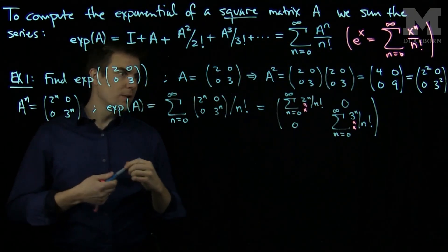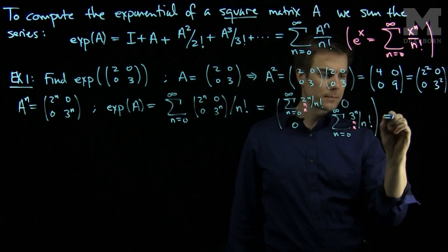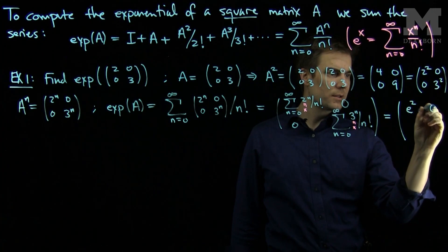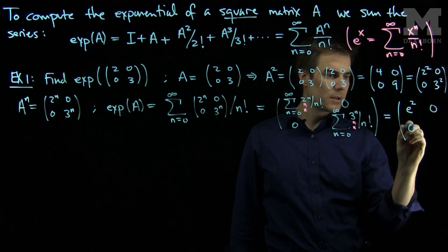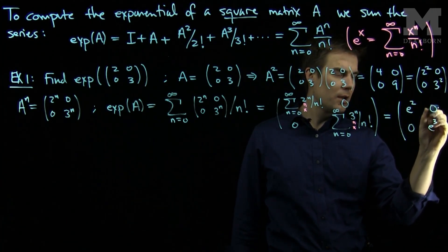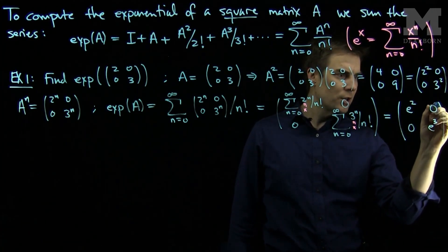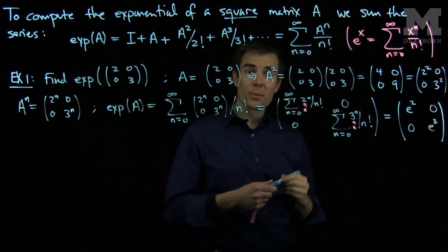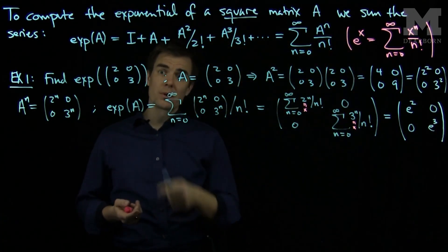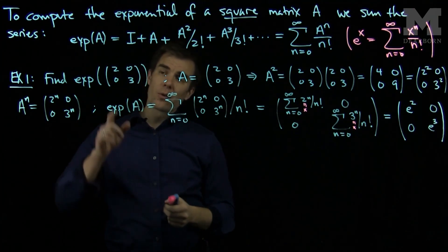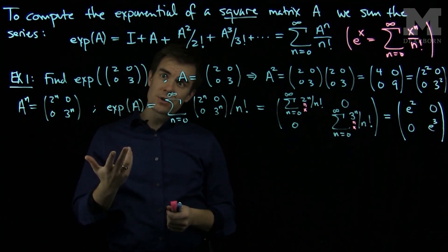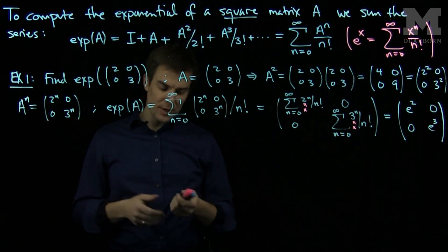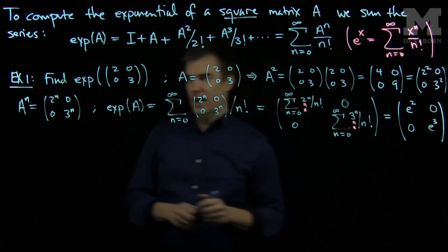So using the definition of e to the x in its Taylor form, we see that this matrix is going to become [e squared, 0, 0, e cubed]. So in fact we have a nice formula: when the matrix is diagonal, to exponentiate the matrix all I do is exponentiate the diagonal entries. Let's see another example.